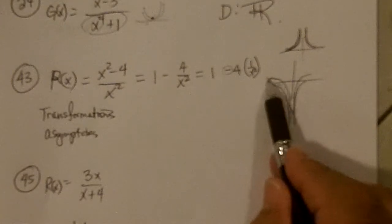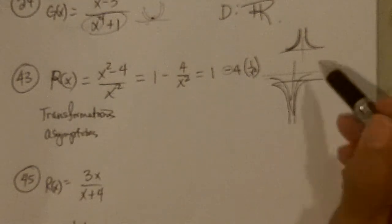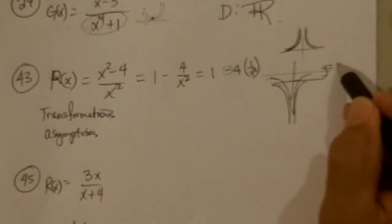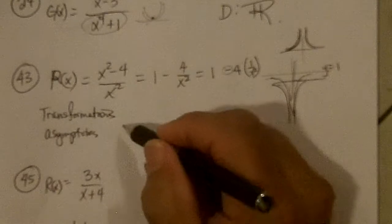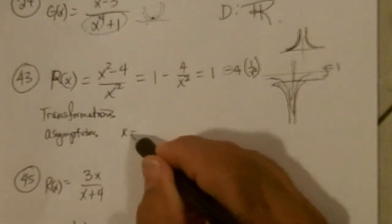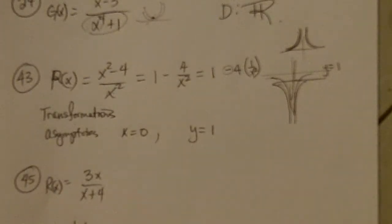Which means, before it had a horizontal asymptote of 0, so now it has a horizontal asymptote of y equals 1. And a vertical asymptote at 0. And y equals 1, because it's moved up 1.